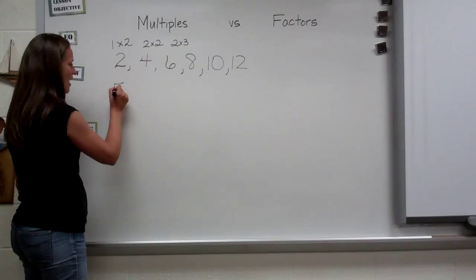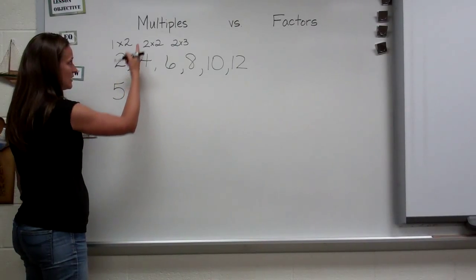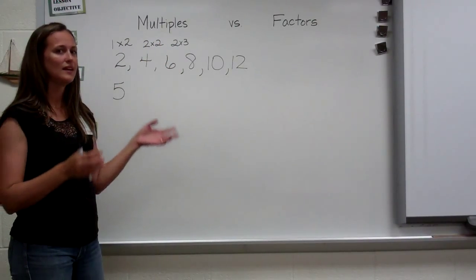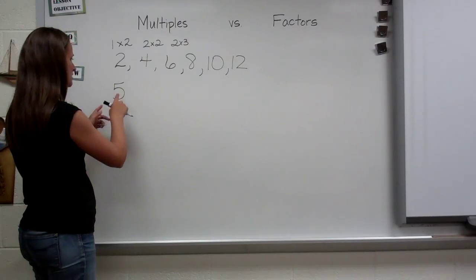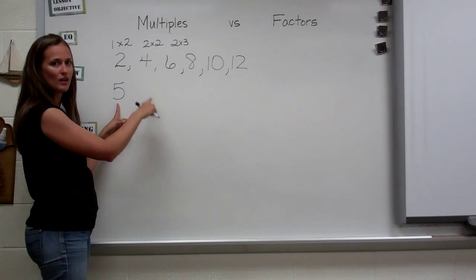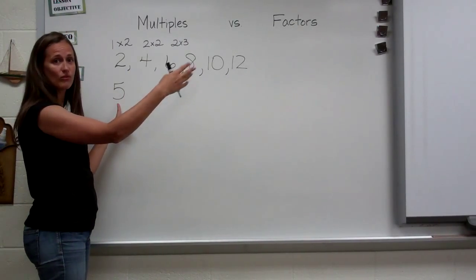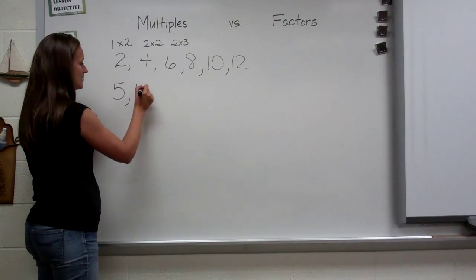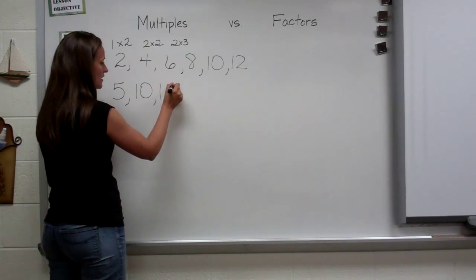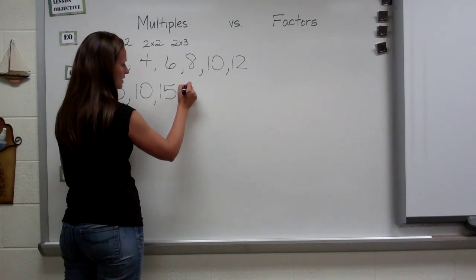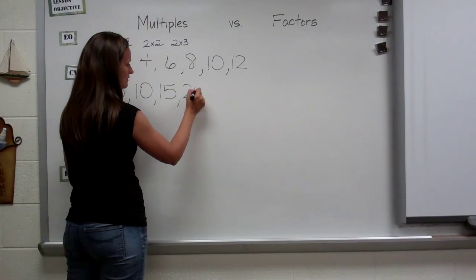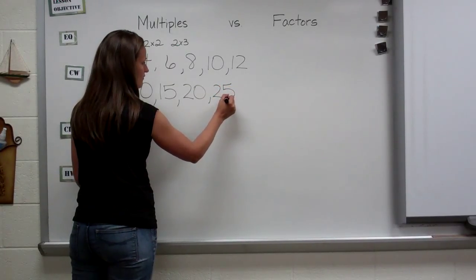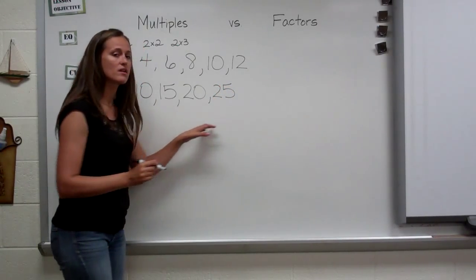Let's try a different number. What about five? If I'm listing the multiples, I want to think of the word multiply. I'm going to multiply this same number by one, two, three, four, five, and so on. So it would be five, ten, fifteen, twenty, twenty-five, so on and so forth.